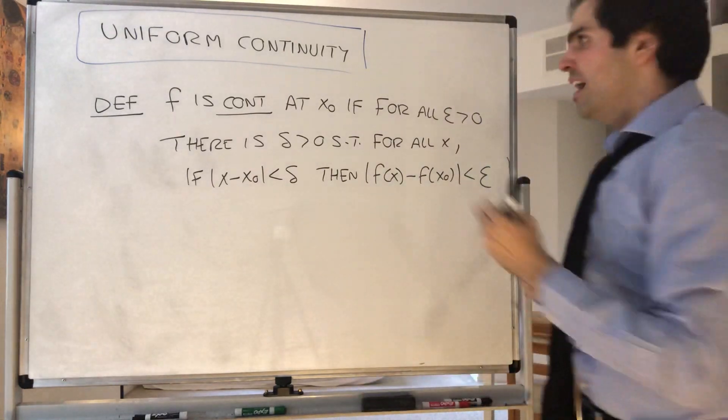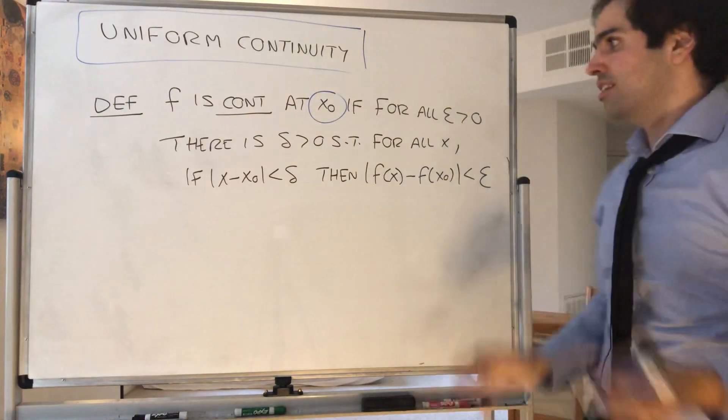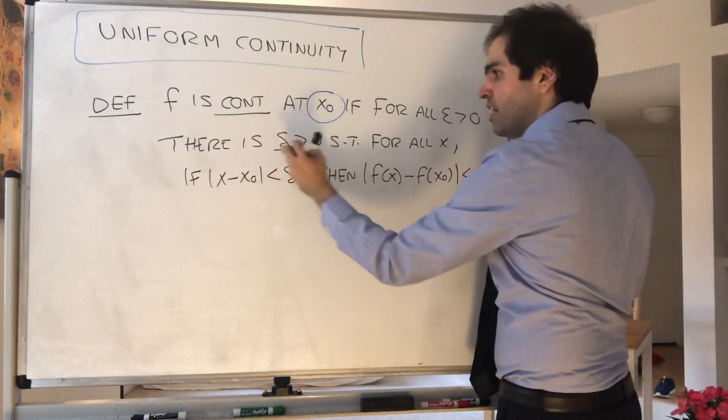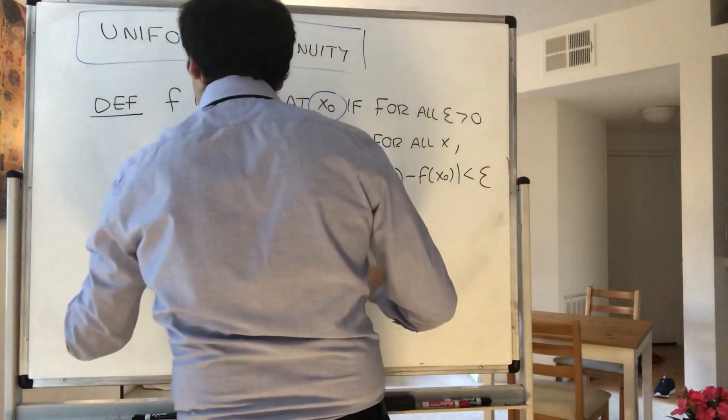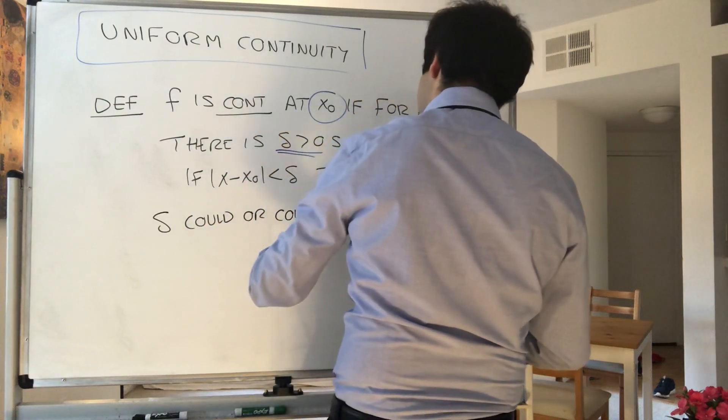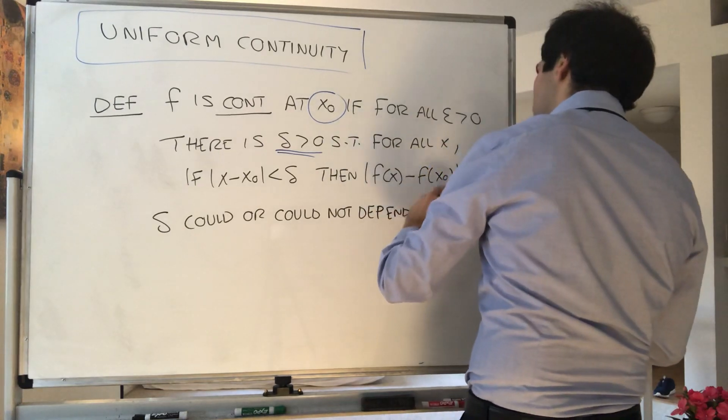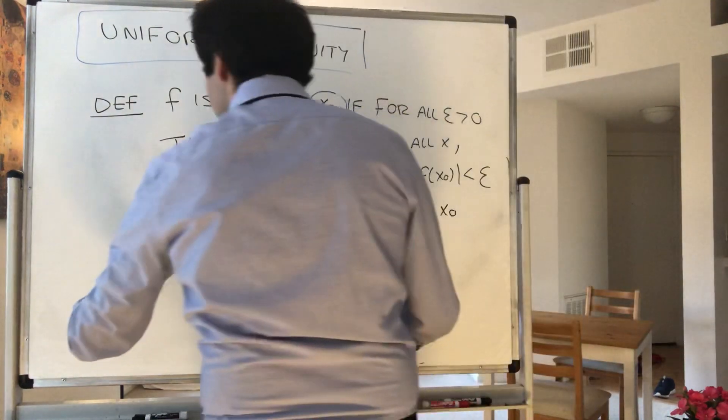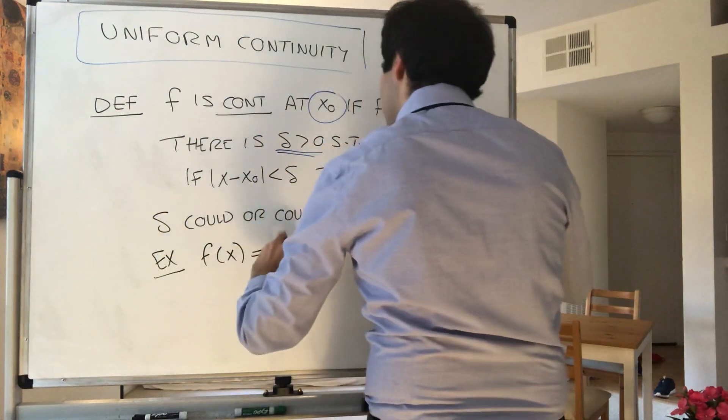Here we're fixing x0 and you do everything with that x0. So in particular, delta could depend on x0. So delta could or could not depend on x0. For instance...